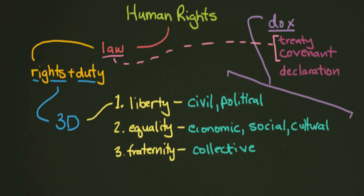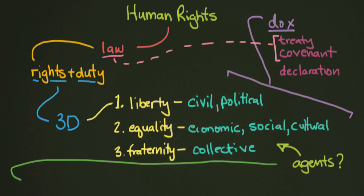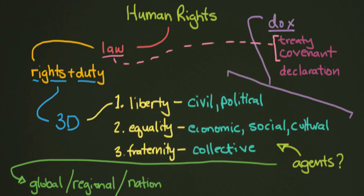We also discussed the question of agents — who is doing all this? You could also call them actors, or even watchdogs. There are lots of different types of organizations looking out for rights and monitoring rights across the three different dimensions. They can be organized into big levels: the global level, the regional level — which might be for a continent or a big group of countries — and then the national level, where your country might have organizations that look out for human rights. You might also have a local organization in your community or region.